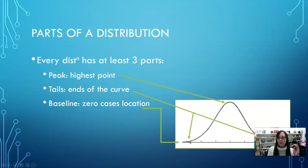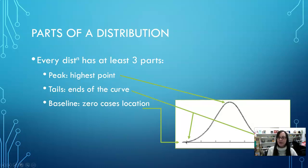If we go out far enough, eventually the curve would become close enough to the baseline that we would say there are zero cases there. The peak is showing the highest number of cases, while the tails are showing the lowest number of cases.